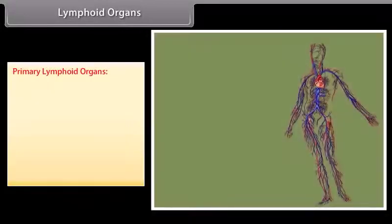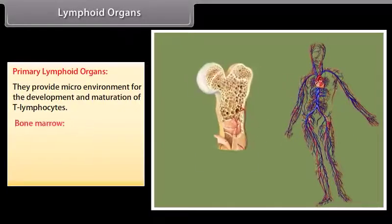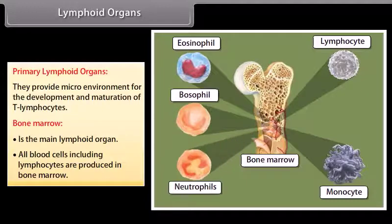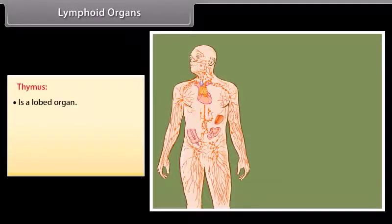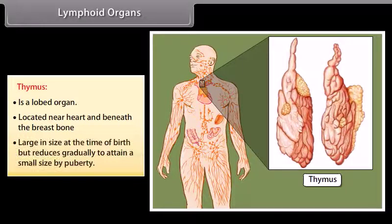Primary lymphoid organs provide a microenvironment for the development and maturation of T-lymphocytes. Bone marrow is the main lymphoid organ where all blood cells, including lymphocytes, are produced. The thymus is a lobed organ located near the heart and beneath the breastbone; it is large at birth but reduces gradually to a small size by puberty.